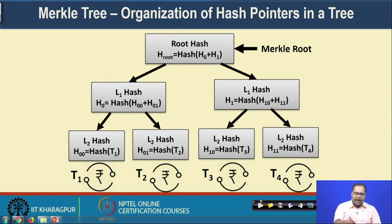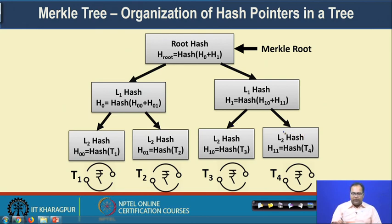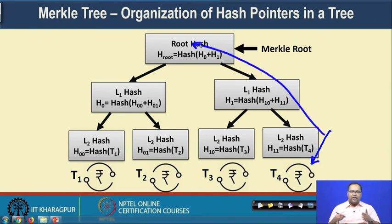Based on hash pointers, we have another data structure called the Merkle tree. The root hash has two pointers — the left pointer points to a level-one hash and the right pointer to the right hash — down to nodes just before the leaf nodes, which point to individual transaction hashes. If you make any change in one transaction, it gets reflected in the entire path up to the root, making the entire structure tamper-proof.